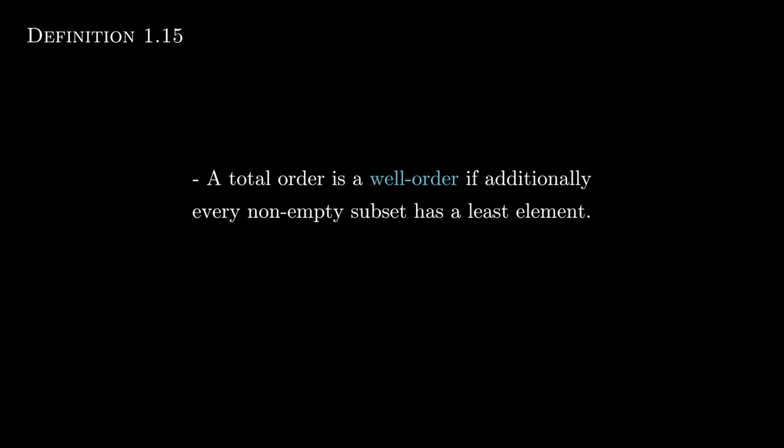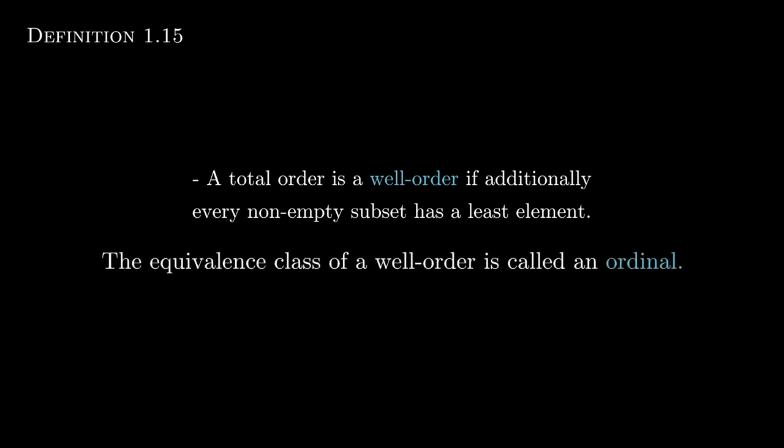A total order is a well order if additionally every non-empty subset has a least element. The less-than-or-equal-to relation on the integers is not a well order, because the entire set of integers has no least element. On the natural numbers, however, this is the case. The equivalence class of a well order is called an ordinal, and the numbers 3 and 5 we discussed are in fact ordinals — equivalence classes of well orders.